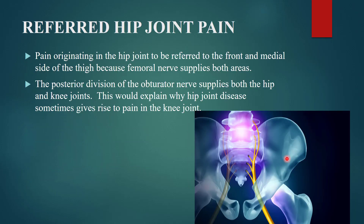Referred pain from the hip joint: pain originating in the hip joint can be referred to the front and medial side of the thigh because the femoral nerve supplies both areas. The posterior division of the obturator nerve supplies both the hip joint and the knee joint, so hip joint pain can sometimes be referred to the knee joint.